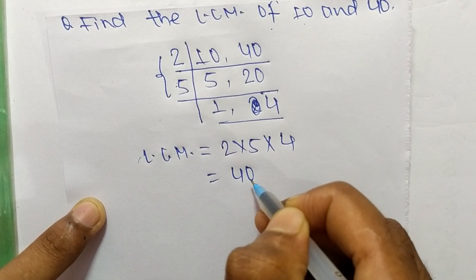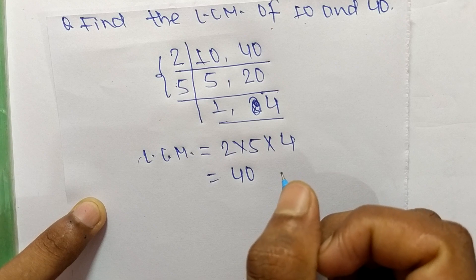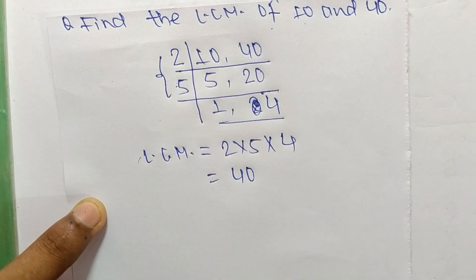So 40 is the LCM of 10 and 40. This much for today, and thanks for watching.